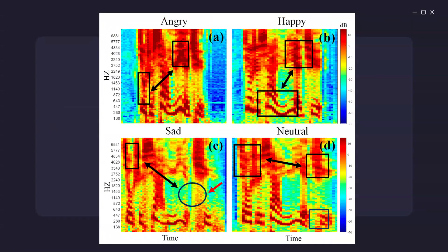If you observe the Mel spectrogram, you can analyze sound patterns and emotions. As you can see in the slide, different kinds of emotion can be easily identified by focusing on the Mel spectrogram because each emotion is very distinct. So we can distinguish between emotions, types of sounds, and even between speakers. We can also extract features from the Mel spectrogram to use in ML models for tasks like emotion recognition, speech recognition, and speaker identification.